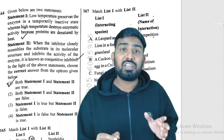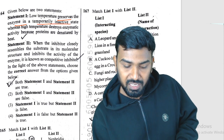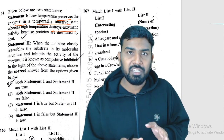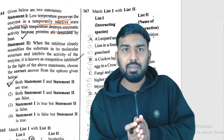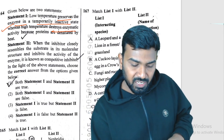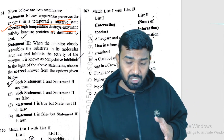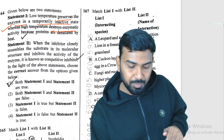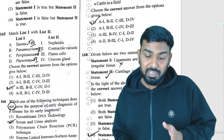Question 164: statement one — low temperature preserves enzymes in a temporarily inactive state, while high temperature destroys them. Enzymes function in a narrow temperature range; at lower temperatures they become inactive; at high temperature peptide bonds break and the enzyme denatures. Statement two — when an inhibitor closely resembles the substrate it is called competitive inhibition. Both statements are correct.